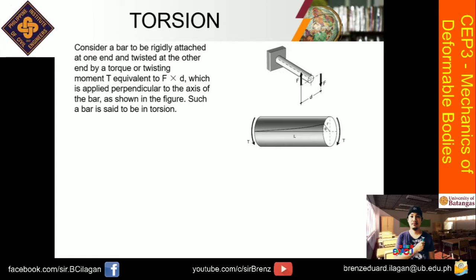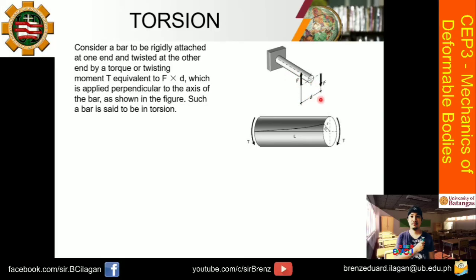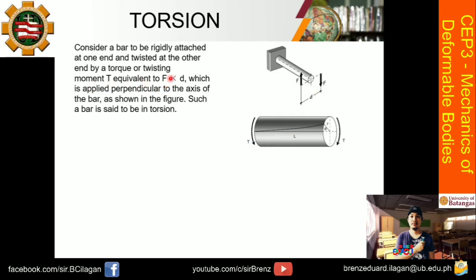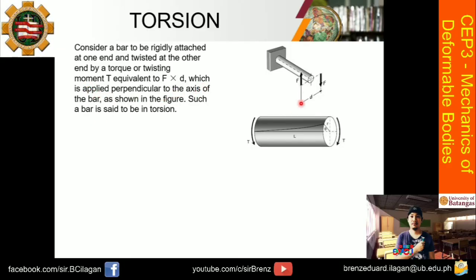Consider a bar rigidly attached at one end, and twisted at the other end by a torque or twisting moment. On the other end, there is a force acting at a distance d, and this force produces a twisting moment T, where T equals force times distance — just like a regular moment, but twisting. The bar is being twisted, applied perpendicular to its axis, and this condition means the bar is said to be in torsion.